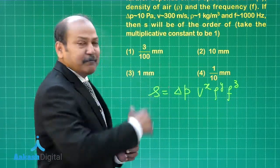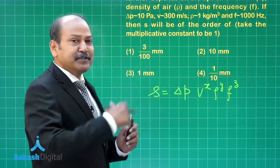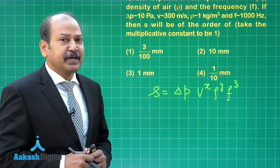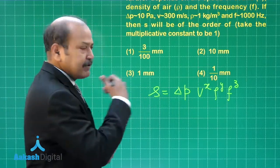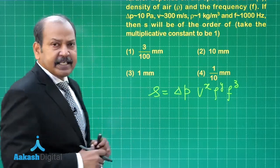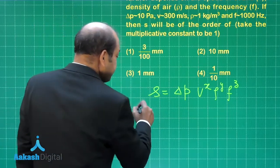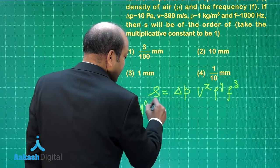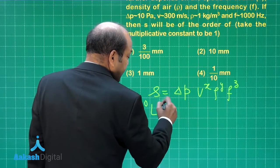Of course, now by equating dimensions of the two sides we can find the values of x, y and z. Let us write one more step. So on the left hand side we have m⁰ if you look at the dimensions, l¹ and t⁰ in terms of dimensions.